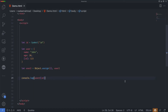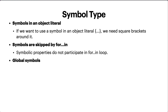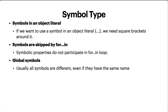There is no paradox here — that's by design. The idea is that when we clone an object or merge objects, we usually want all properties to be copied, including symbols like id in our case. Now, global symbols: usually all symbols are different even if they have the same name, but sometimes we want same-name symbols to be the same entity. To achieve that, there exists a global symbol registry.